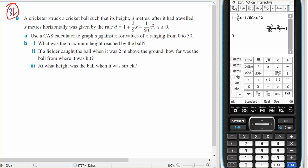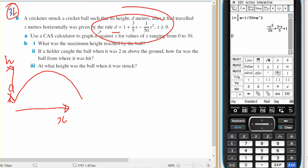This is for Year 11 Methods. It's question number 8 out of 3L. The cricketer struck a cricket ball such that the height travelled after x horizontally is given by this rule here. So here's my cricketer holding a bat, hits the ball. This is going to be x and this is going to be height, and it's followed by that rule.